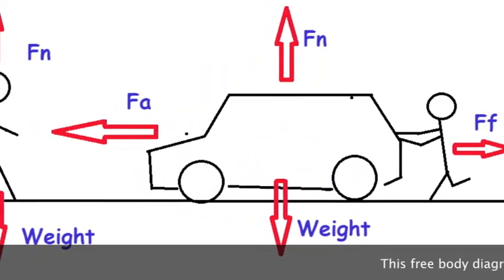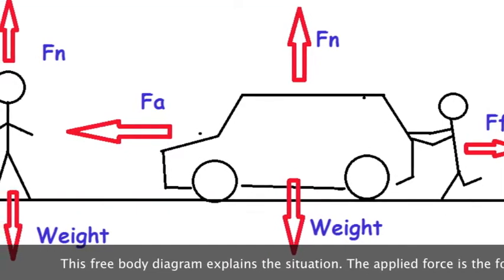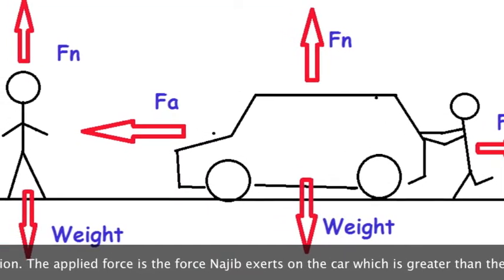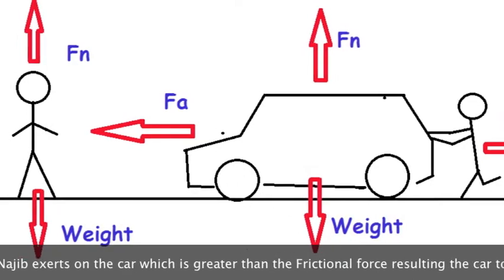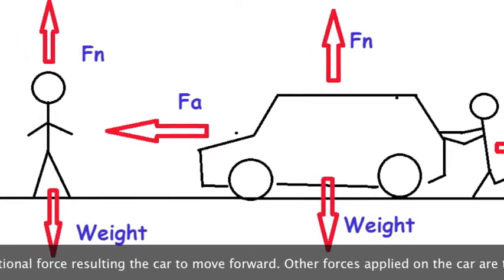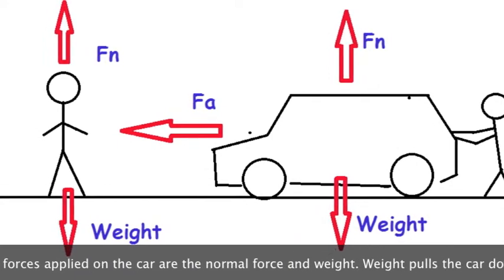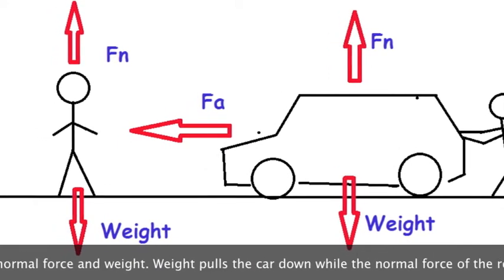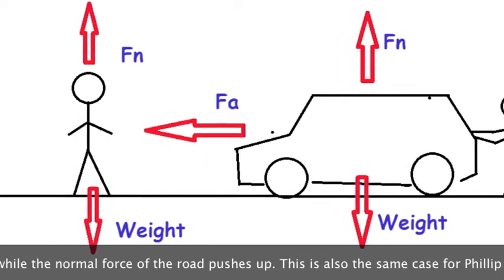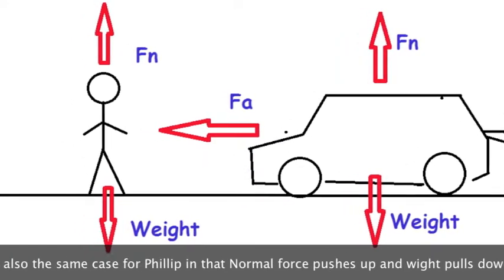This free body diagram explains the situation. The applied force is the force Najeeb exerts on the car, which is greater than the frictional force, resulting in the car moving forward. Other forces applied on the car are the normal force and weight. Weight pulls the car down while the normal force of the road pushes up. This is also the same case for Philip, in that the normal force pushes up and weight pulls down.